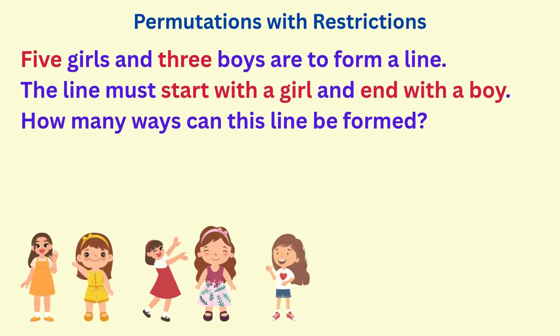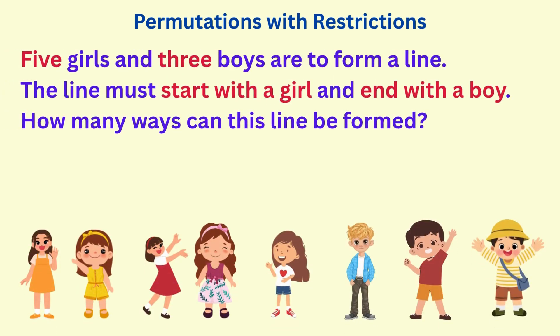Five girls and three boys are to form a line. The line must start with a girl and end with a boy. How many ways can this line be formed? There are five girls to choose from for the first position. And there are three boys to choose from for the last position.